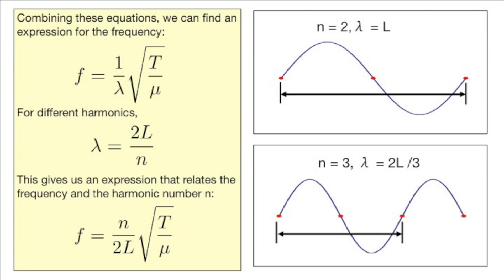Combining the above equations, we find an expression for the frequency of the nth harmonic in terms of the length of the string, the tension, and the mass per unit length of the string.